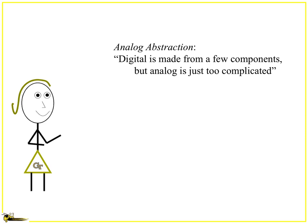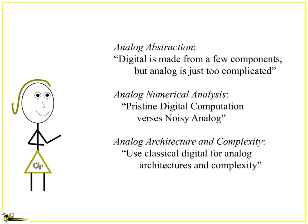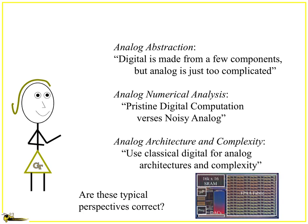A couple of key things are important. One is abstraction — digital is thought of as things that can be built with a few components, but analog just can't be done that way. You talk about the numerical aspect: pristine digital computation versus analog that's really noisy and messy. And then analog architecture and complexity, which generally is thought of as having not that much there. But with recent work, we're starting to see some different views. This journey has been fueled by knowing FPA devices.